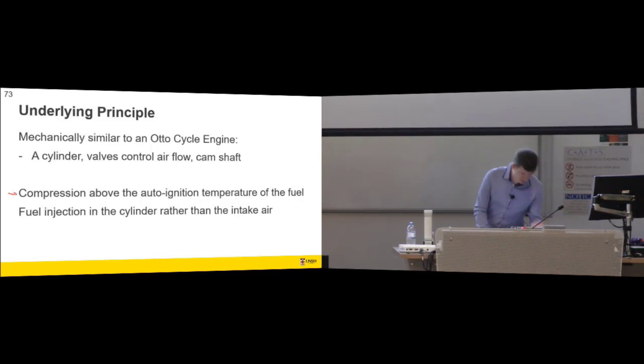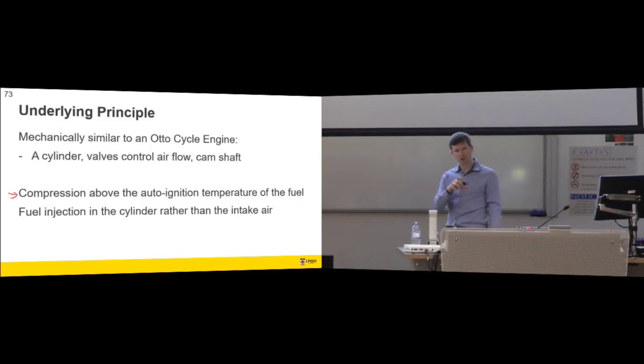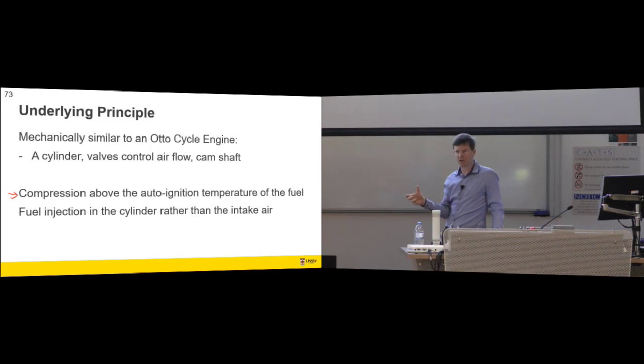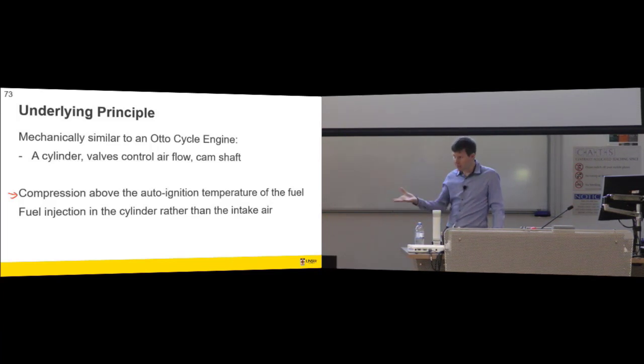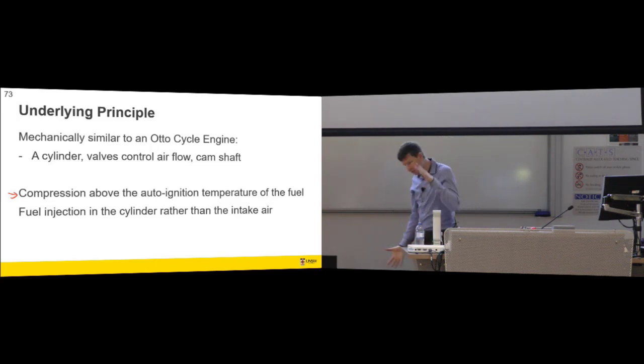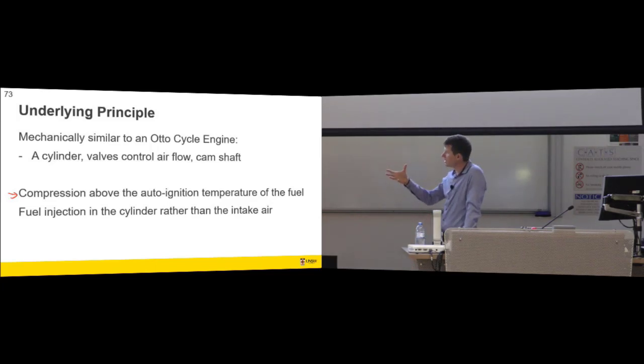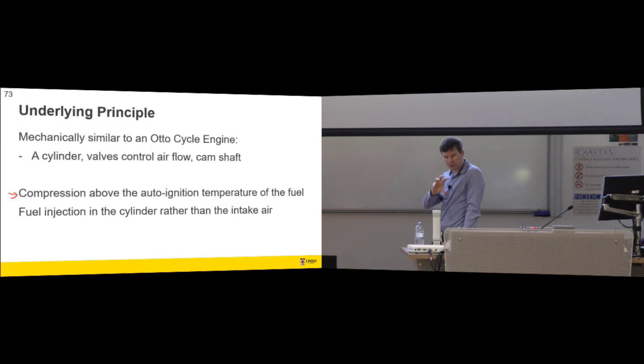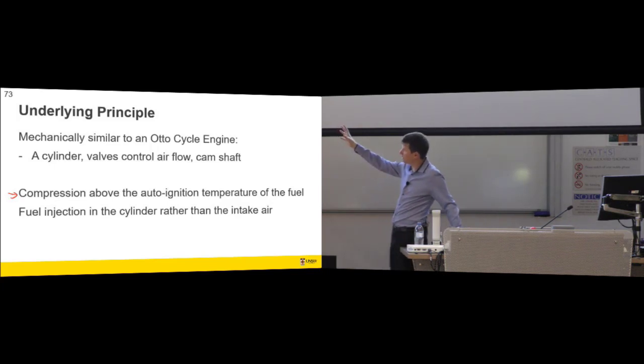The important different feature is that the compression now is above the auto ignition temperature of the fuel. So in the auto cycle, we recognized that you got more efficient the higher compression ratio. So the solution would seem to be, just jack your compression ratio through the roof.